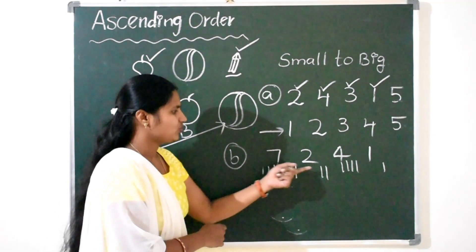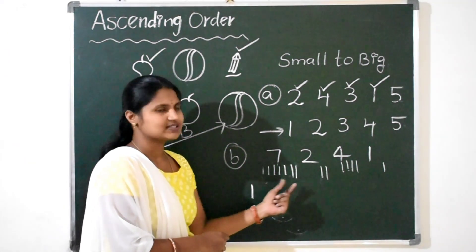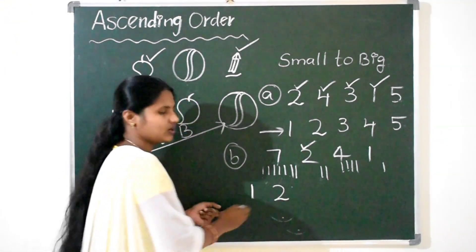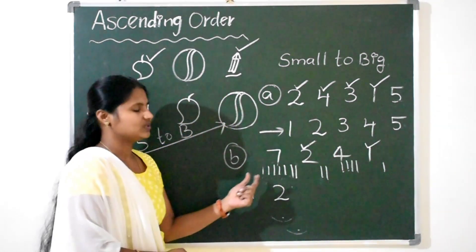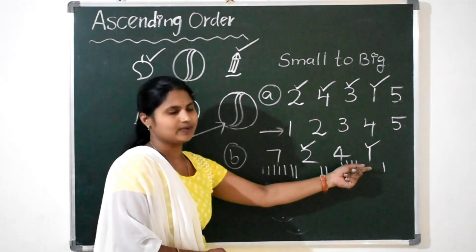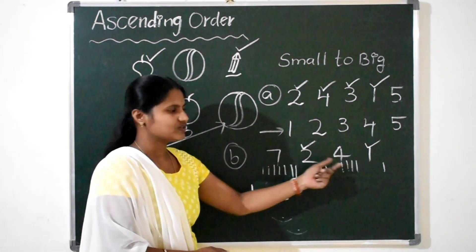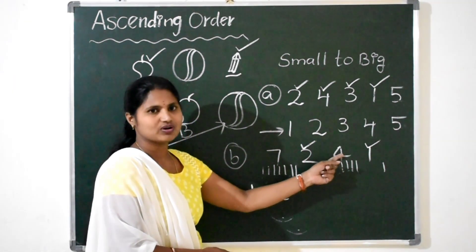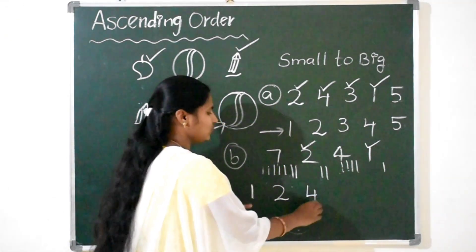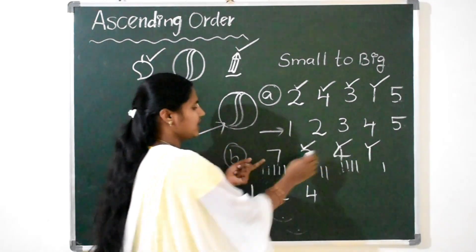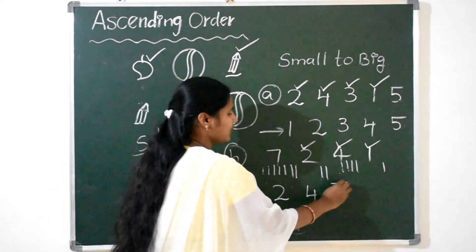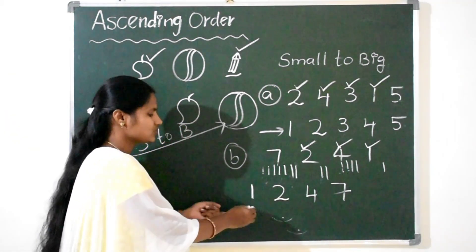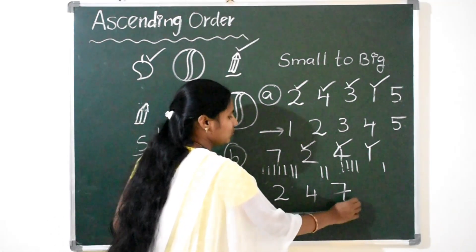Now compare 7, 2, and 4. Which has fewer lines? 2 is having fewer lines, so 2 comes next. Now come to 7 and 4. Which number comes first? 4 is having fewer lines, so 4 comes next. 7 is having more lines, so 7 is the biggest. 7 comes last. We have arranged the numbers from small to big: 1, 2, 4, 7.